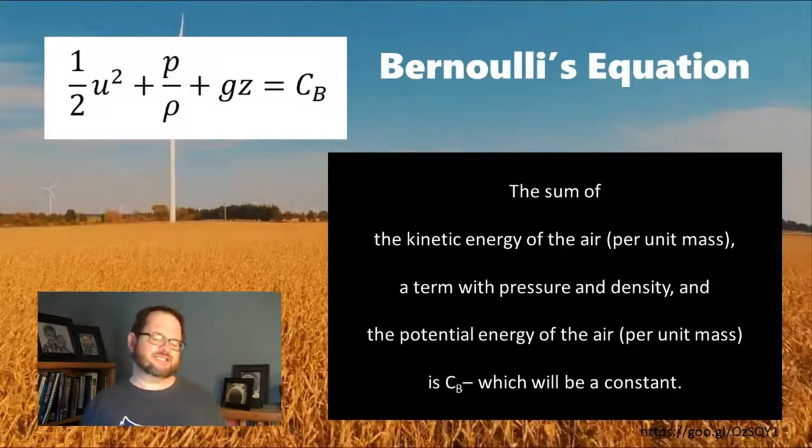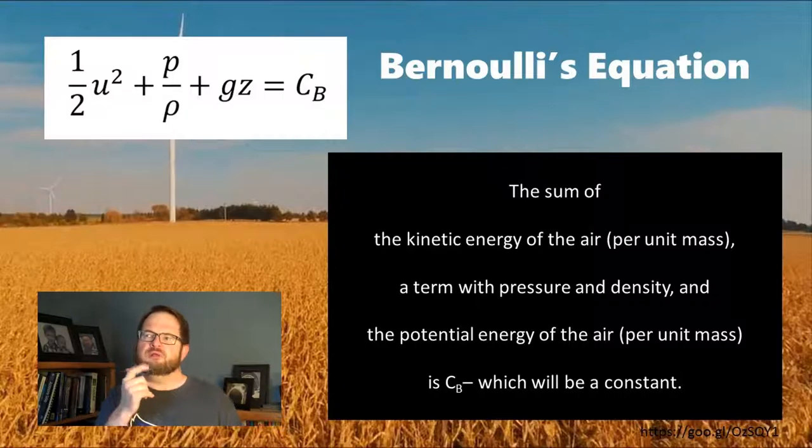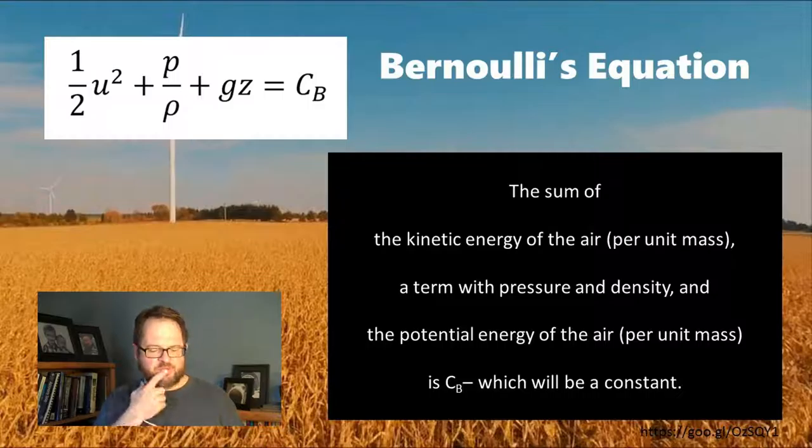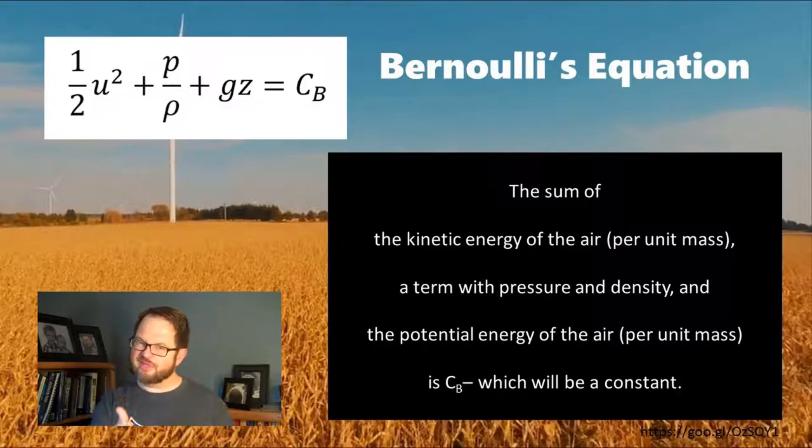Well, it turns out Bernoulli's equation is this thing that's up here in the top left corner of the screen. Let's actually pick this apart. 1/2 u squared—we'll use u for the speed of the wind. 1/2 times speed squared—that ought to sound like kinetic energy to you. Kinetic energy would be like 1/2 m u squared. So this is kinetic energy per unit mass. We divide it through by the mass. Now we've got another term that has p over rho. It's got pressure and it's got density. I don't know what to call that thing, at least not yet. But it's there. There's a term that is gz.